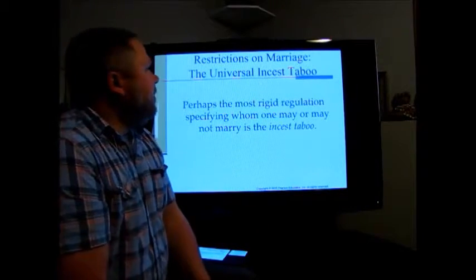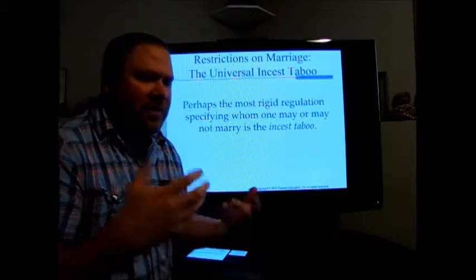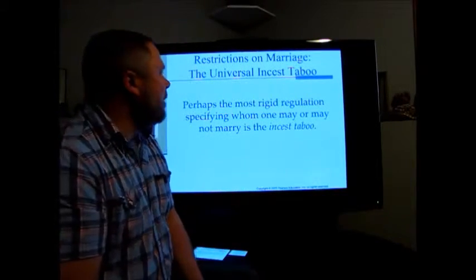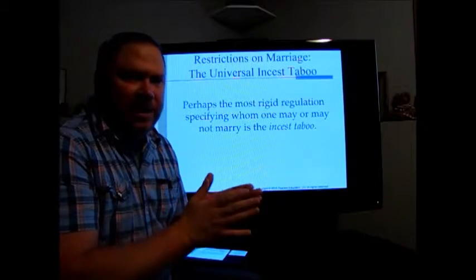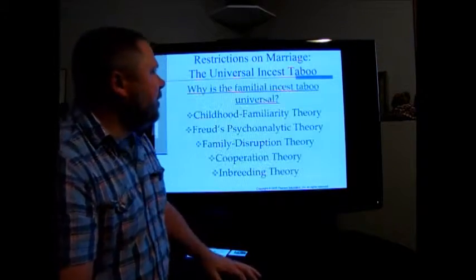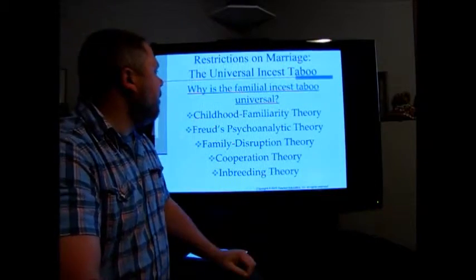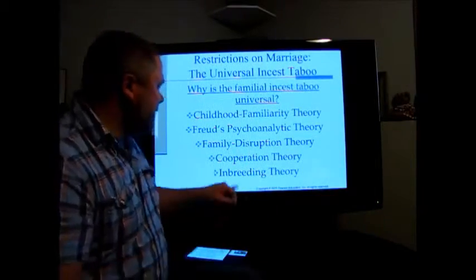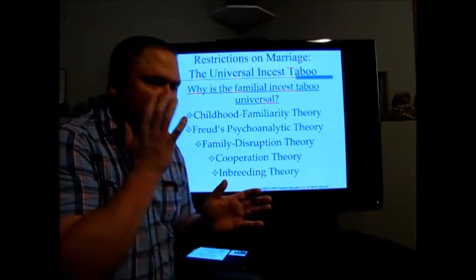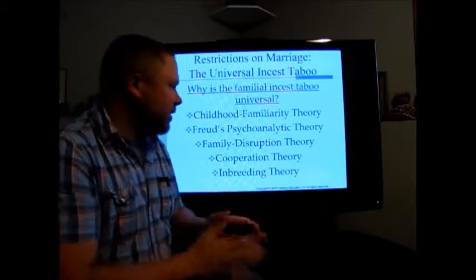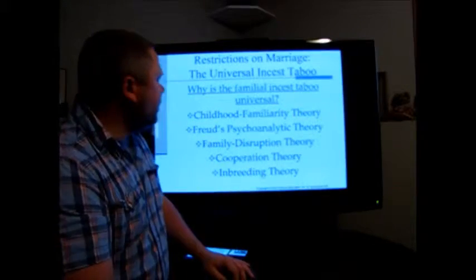Some restrictions on marriage: another universal is the incest taboo, which to us just makes sense. Usually you cannot marry close kin. There are different theories as to why. In Western society we usually go with the inbreeding theory — that if you marry and have children with close relatives there are genetic aspects involved, such as genetic deformation.